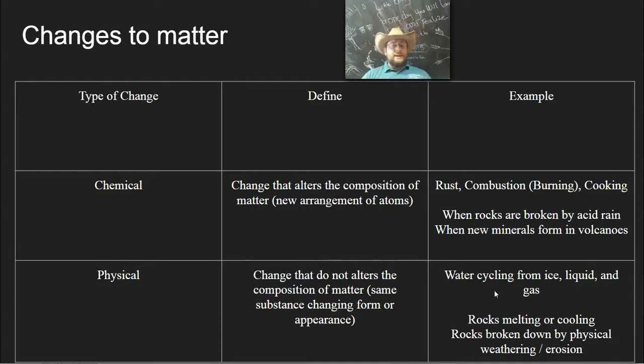Examples of that is like rusting, combustion, when you cook, or in the case of the Earth, when rocks are broken down by acid rain, or when new minerals form in volcanoes. These will all be examples of chemical changes associated with the Earth.